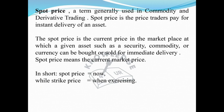Spot price is a term generally used in commodity and derivative trading. Spot price is the price traders pay for instant delivery of an asset. The spot price is the current price in the marketplace at which a given asset — such as a security, commodity, or currency — can be bought or sold for immediate delivery. In short, spot price means now, while strike price means when exercising.